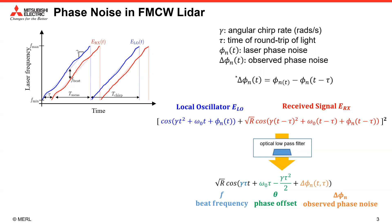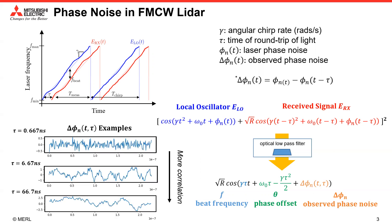This phase noise has second-order statistics that depend on the time delay. Here are some examples of delta phi at varying distances. This time-delay difference of phase noise deviates the beat frequency and can make our distance estimation inaccurate.